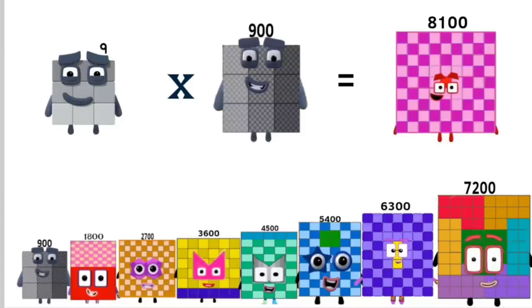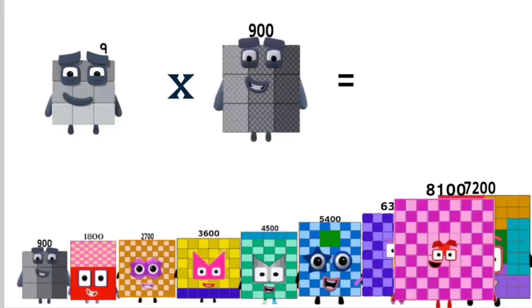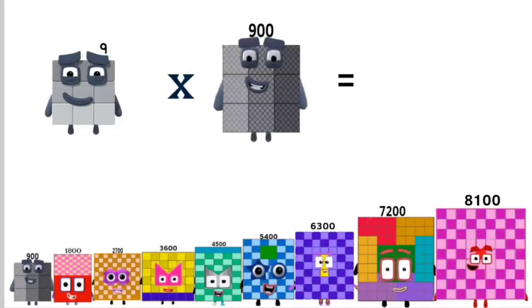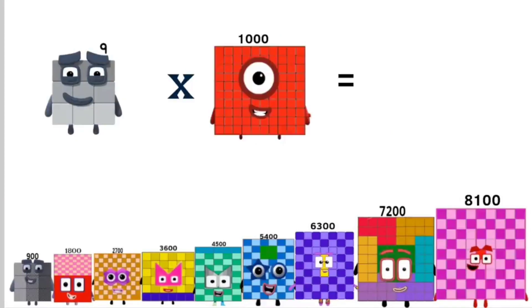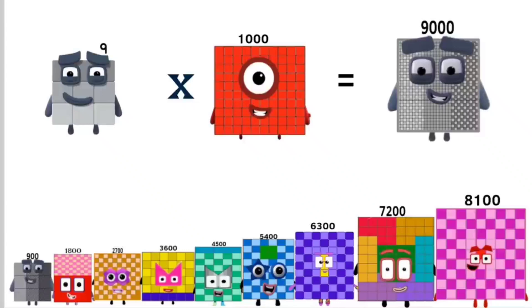Times 900 equals 8,100. Times 1,000 equals 9,000. Stage 2 has been completed.